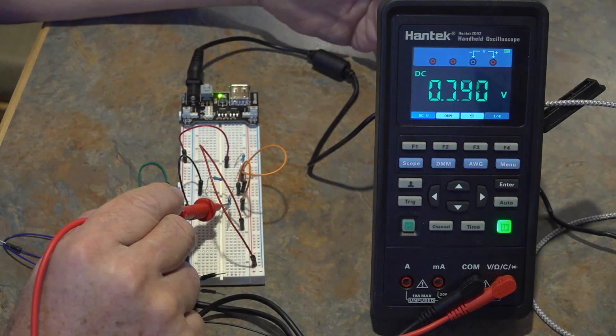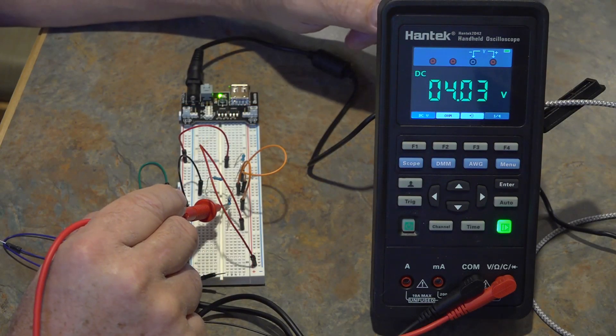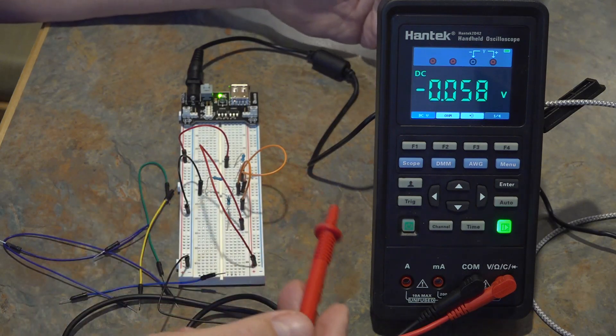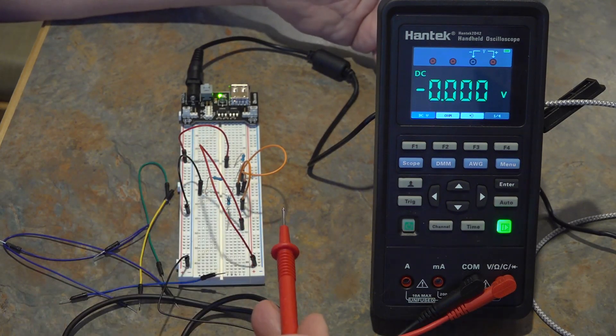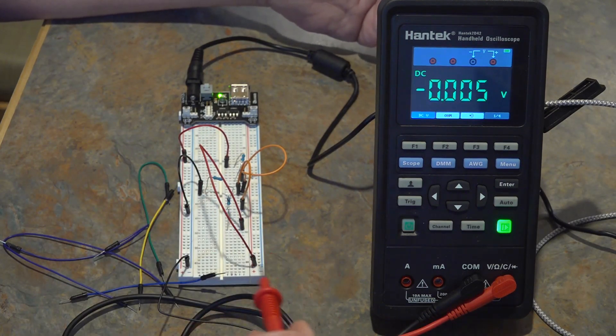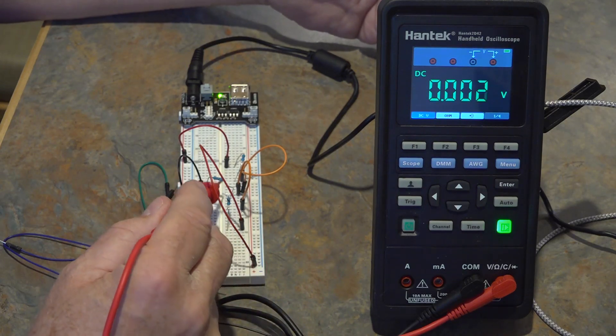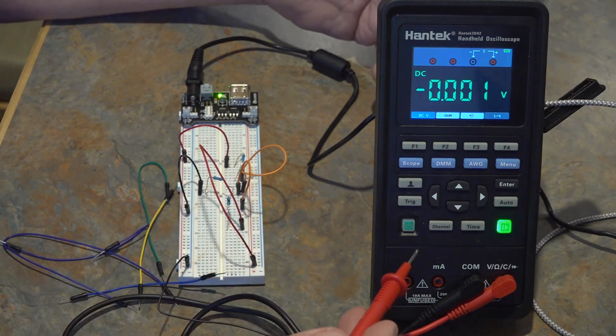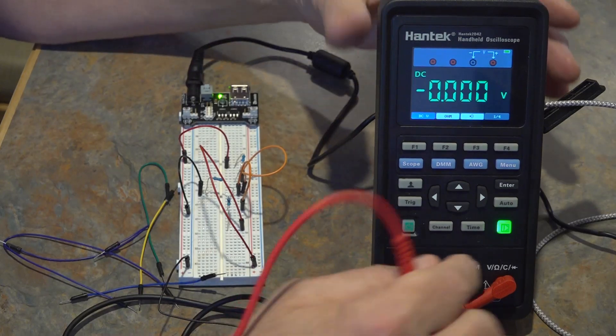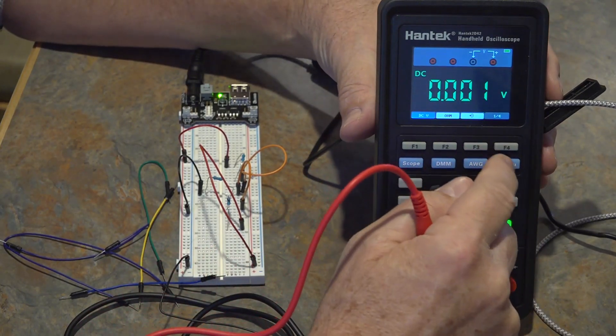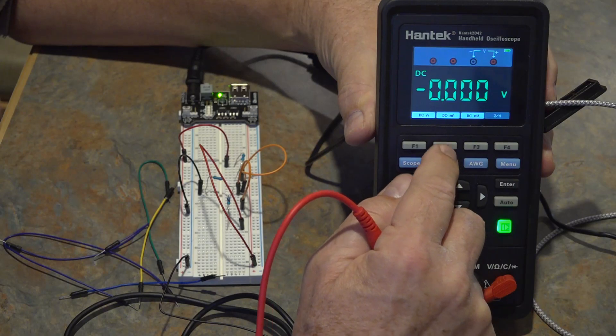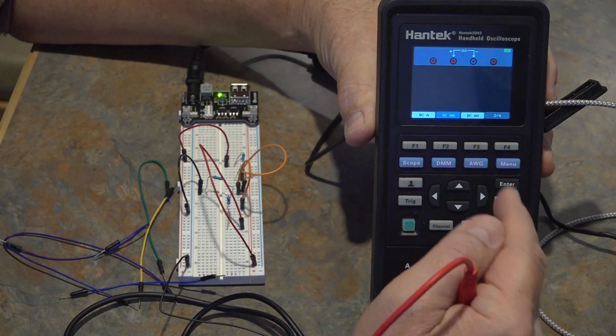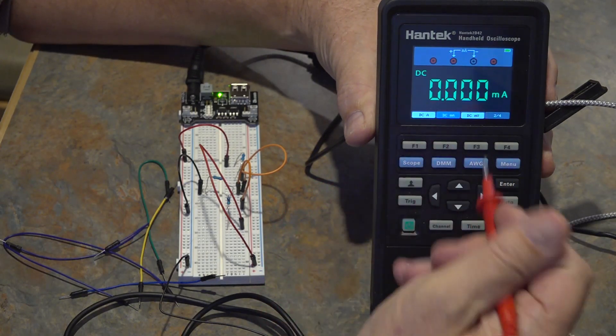Alright so now what we need to do is measure the current in the same paths. We need to know the current at node A, node B and node C. So the first thing we're going to do is switch the multimeter over to current mode. So you go to the next menu and there's DC milliamps there we go.